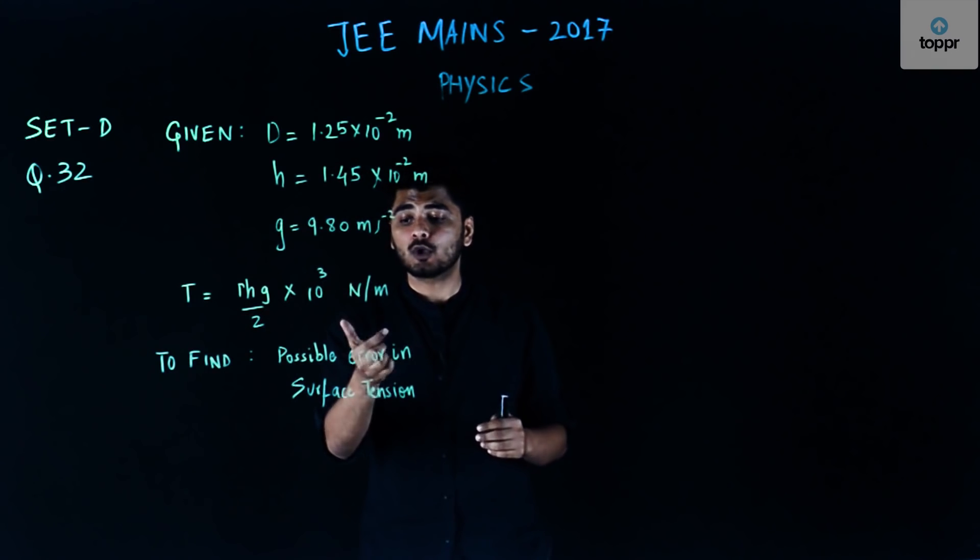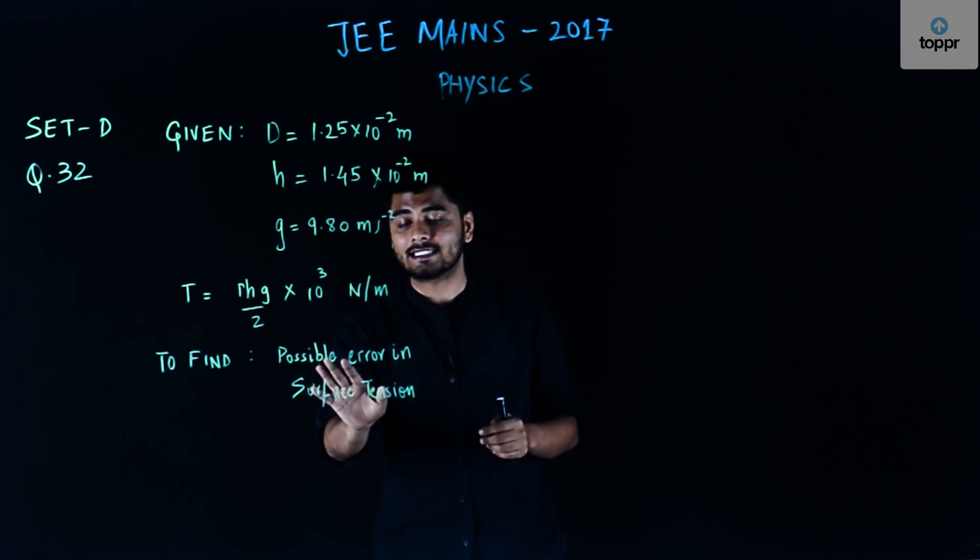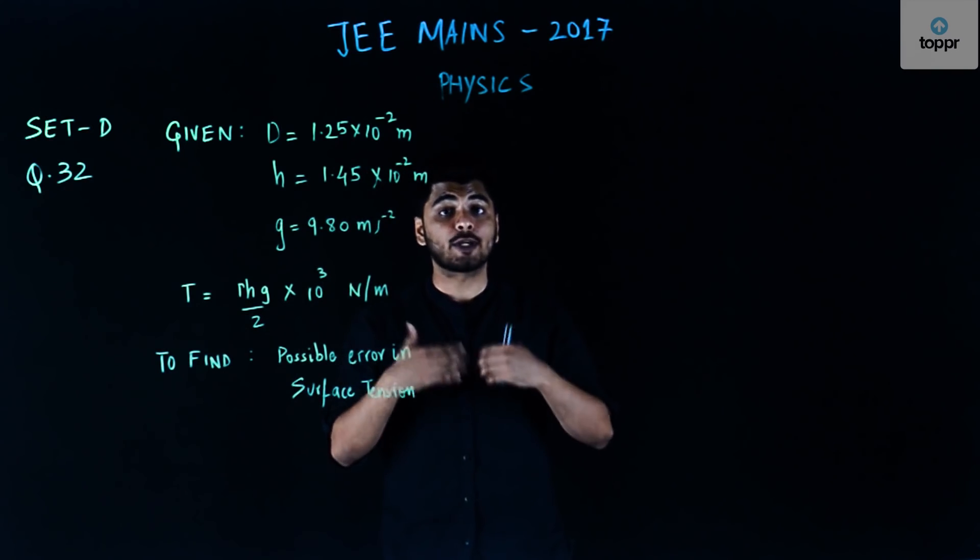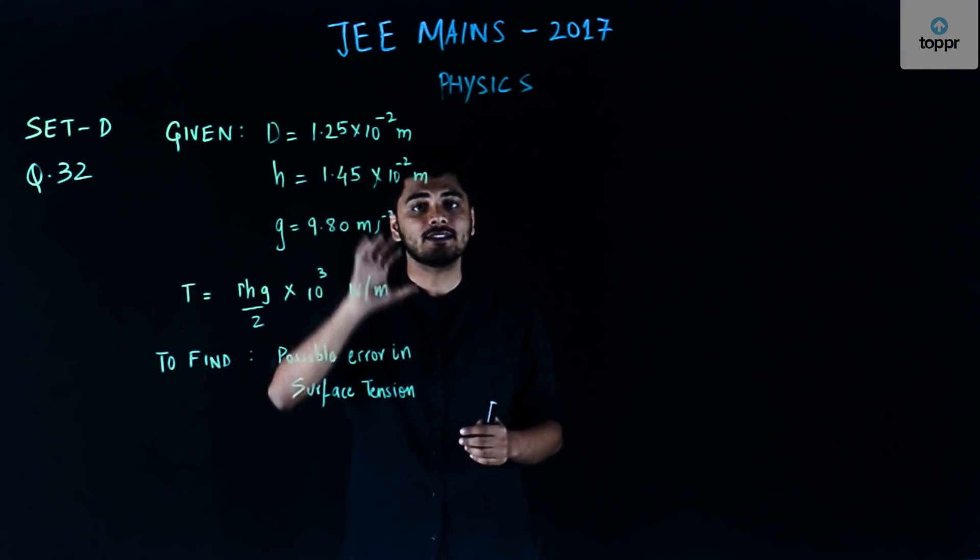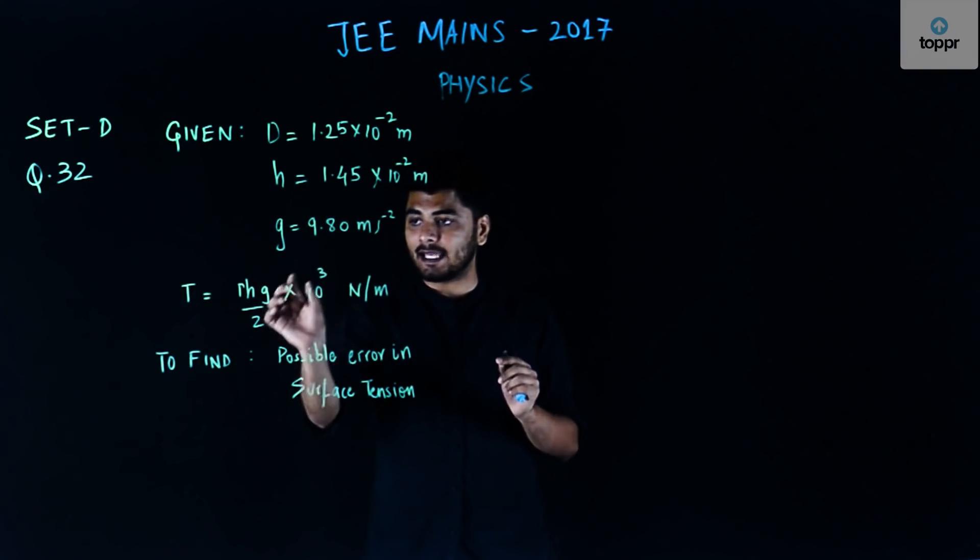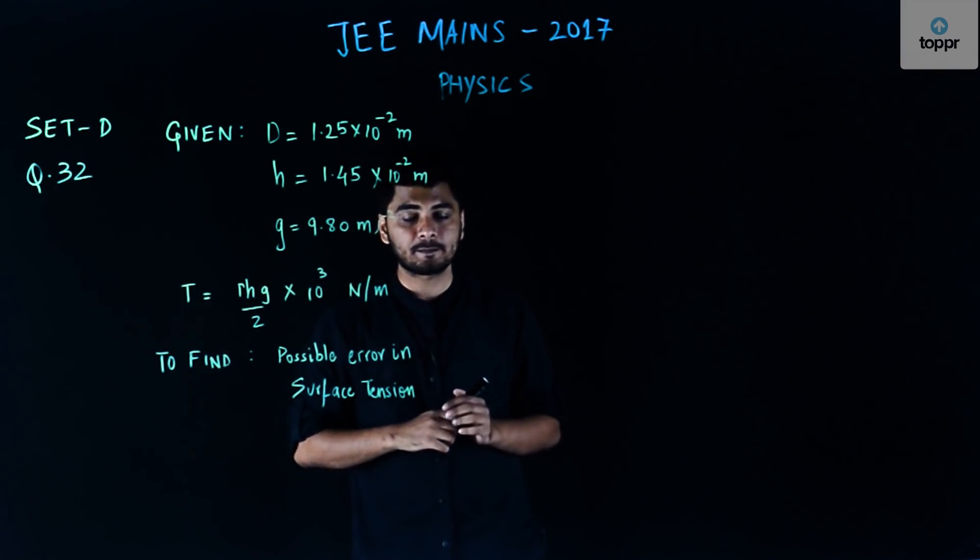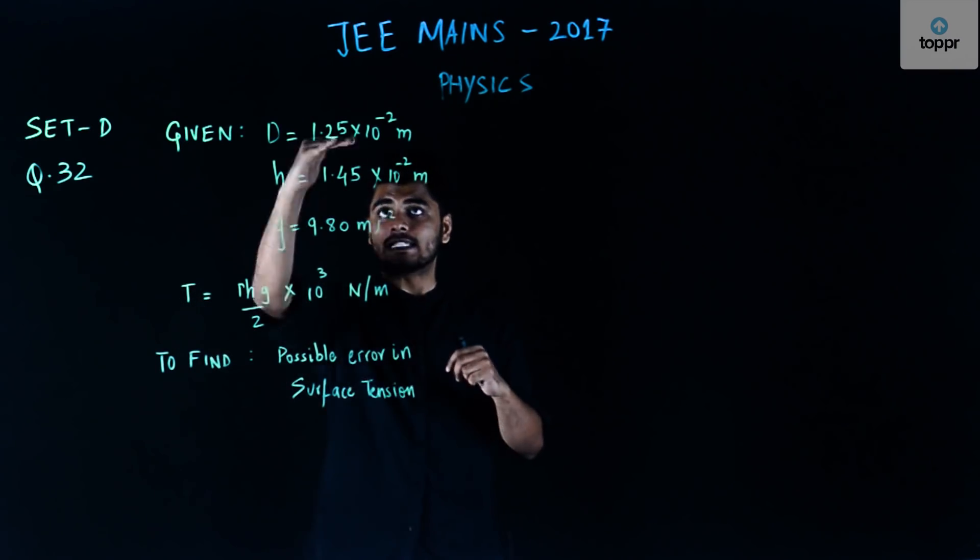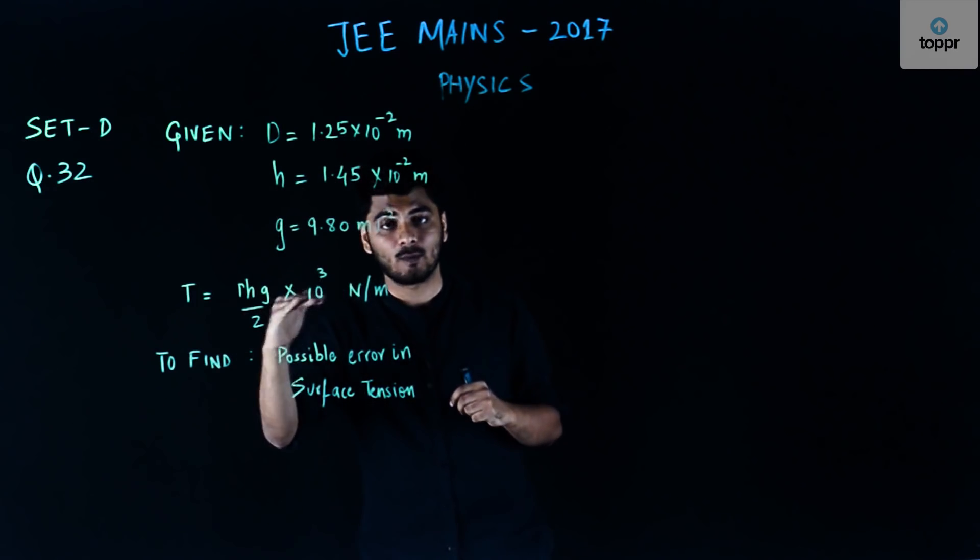Now we have to find what could be the possible error in the surface tension value that we are going to calculate using this apparatus, this experiment, and this formula. Now in order to find the error which can be calculated, I'll just go via this formula and kindly note that these are the values which we need to use while doing so.